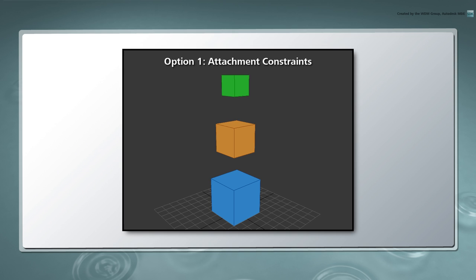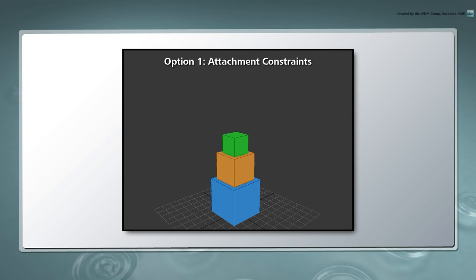At first glance, the most straightforward way to stack shapes would be to create a sequence of attachment constraints and attach each shape to the highest face. However, as we walk through this manual process, we'll discover why using attachment constraints in MaxScript might not be the most convenient solution for our problem.